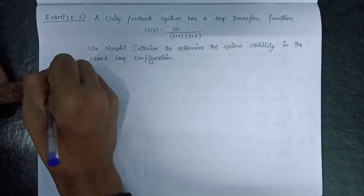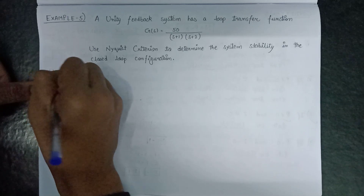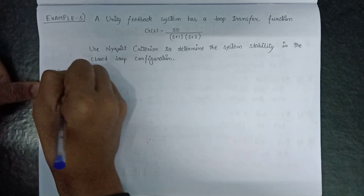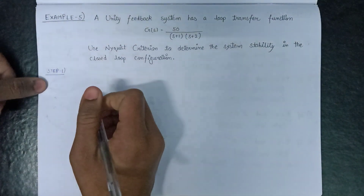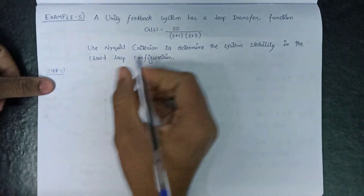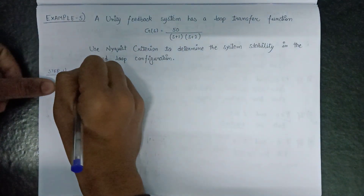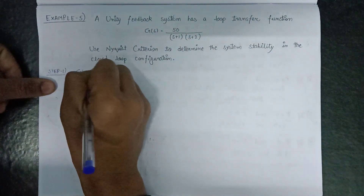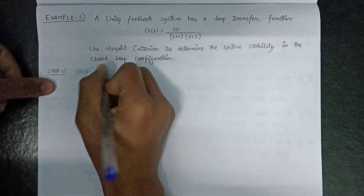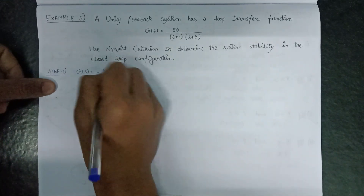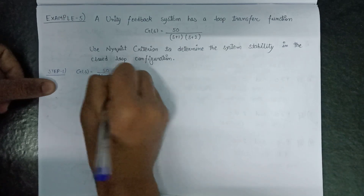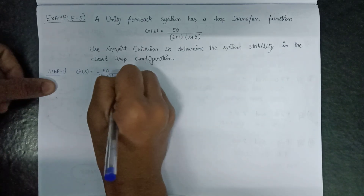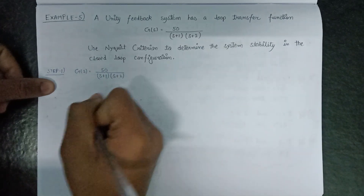Let's begin with step number 1: determination of the transfer function. The transfer function is given as G equals 50 over (s+1)(s+2).